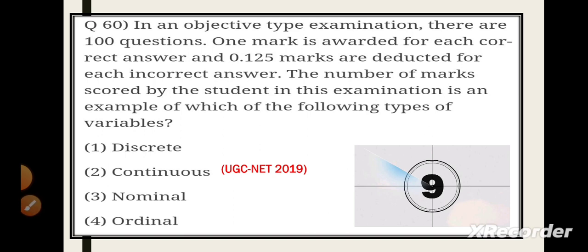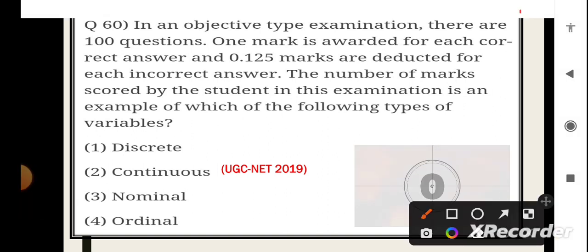Next question is, in an objective type examination, there are 100 questions. One mark is awarded for each correct answer and 0.125 marks are deducted for each incorrect answer. The number of marks that are scored by the student in this examination is an example of which type of variables? So, here as the number of marks are fixed, so it is discrete variables.